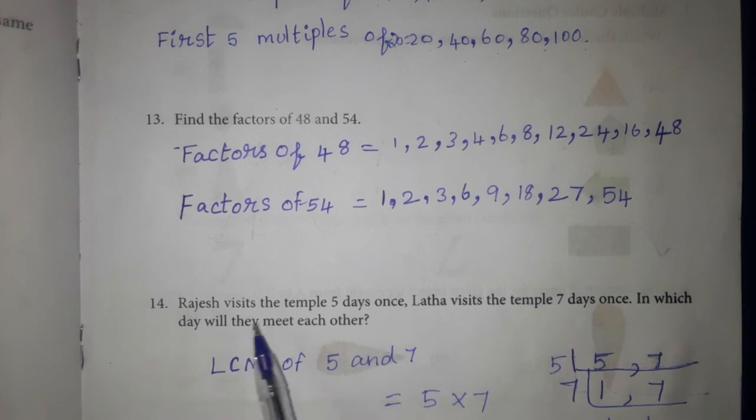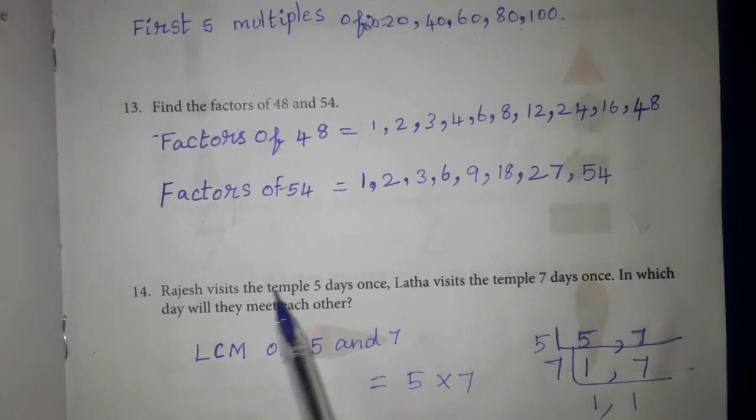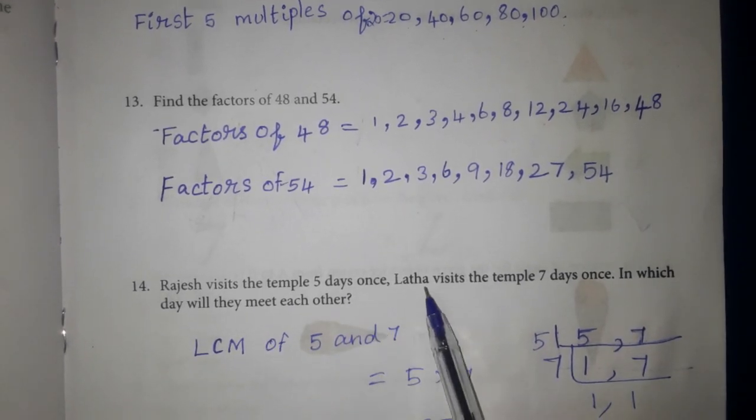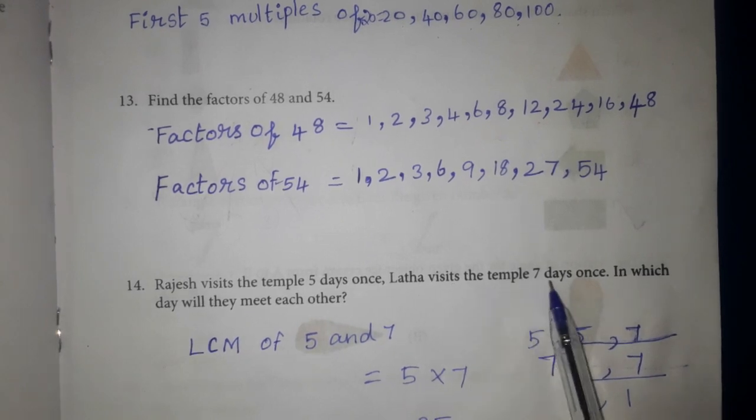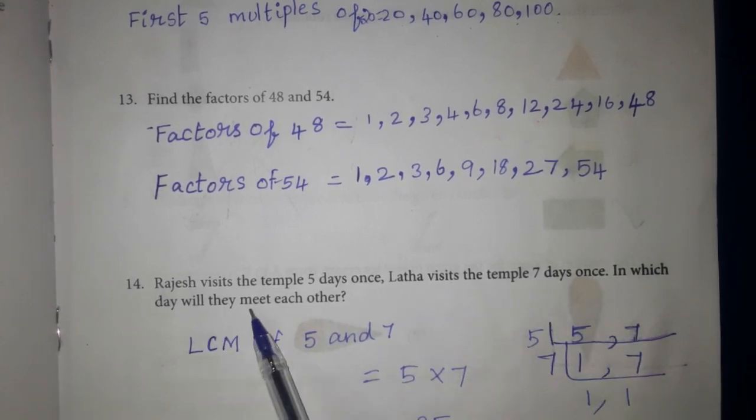Next 14th one, Rajesh visits the temple 5 days once. Latha visits the temple 7 days once. In which day will they meet each other?